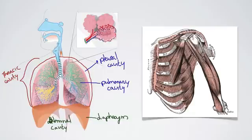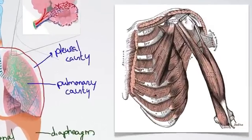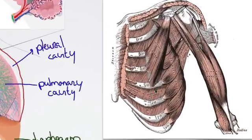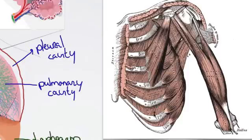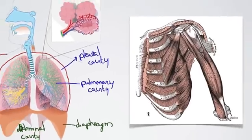Here you can see we have this group of muscles and that is called the external intercostals. You can see them going diagonally here. And then here we have the internal intercostal muscles. So we're going to talk about the things that happen during breathing and mention what roles those play.